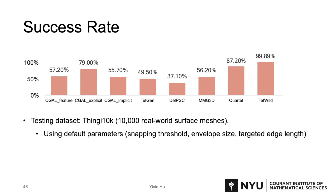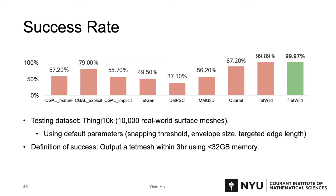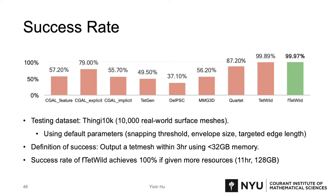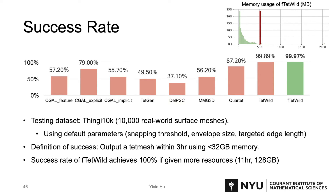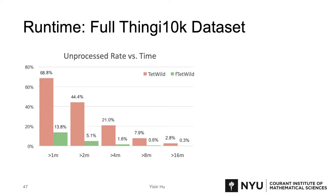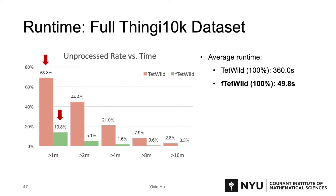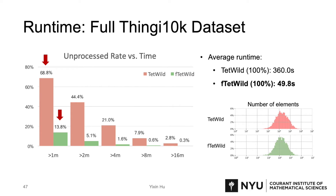Now let's take a look at some results. We tested our method on the large dataset Thingi10k, which contains 10,000 real-world surface meshes using default parameters, and our success rate achieves 99.97%. With more resources given, fTetWild can achieve 100% success rate. Note that fTetWild uses less than 500MB for most models in the 10k dataset. Here is the running time comparison between TetWild and fTetWild on the whole Thingi10k dataset. The plot shows the percentage of inputs still unprocessed after a certain period of time. After one minute, TetWild still has around 68% of the input unprocessed, while fTetWild only has 13%. The average runtime shows fTetWild is seven times faster than TetWild. Note that the mesh sizes of the 10k output produced by these two methods are quite similar, as shown in the histogram of output mesh size.